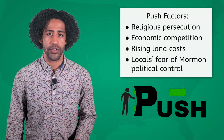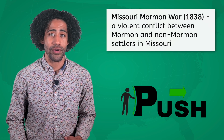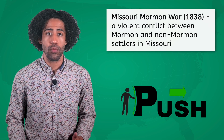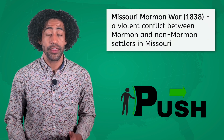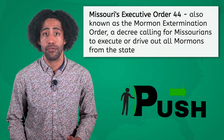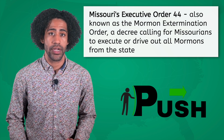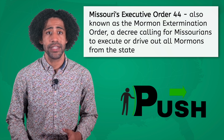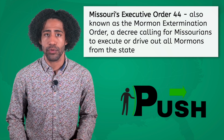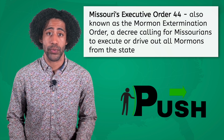These major push factors culminated during the Missouri-Mormon War of 1838, a violent conflict between Mormon and non-Mormon settlers in Missouri. Things got worse when the war resulted in Missouri's Executive Order 44, also known as the Mormon Extermination Order. This decree called for Missourians to execute or drive out all Mormons from the state, leading Mormons to flee and continue their migration westward.